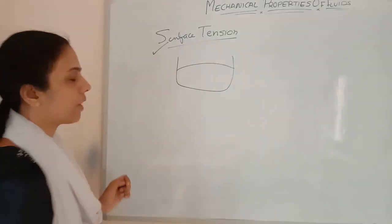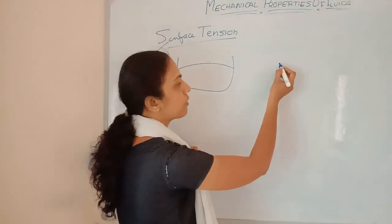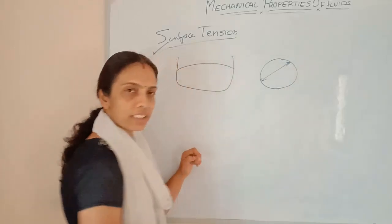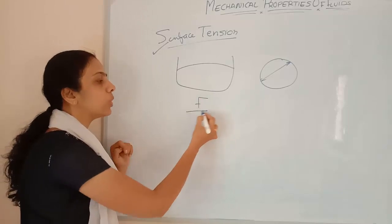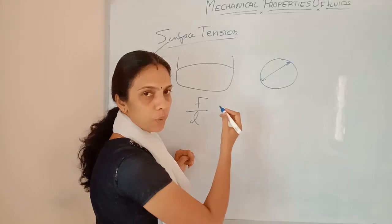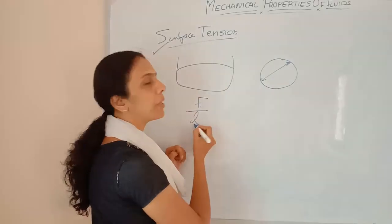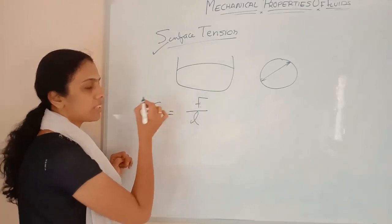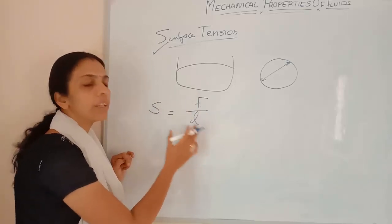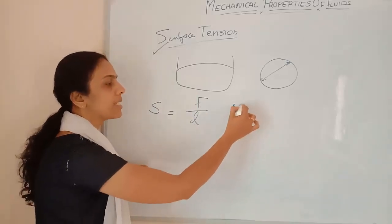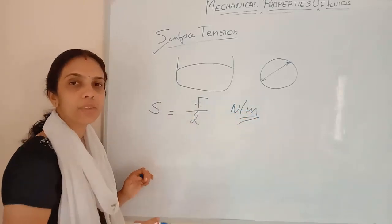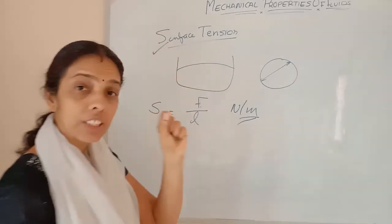How can we find out the surface tension of a fluid? If this is the fluid surface, then the force acting per unit length along any tangent to the surface is called surface tension. Surface tension S is the surface force acting per unit length. The unit is Newton per meter. The force should act tangentially to the surface.